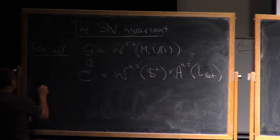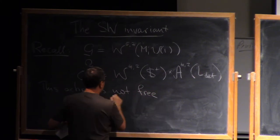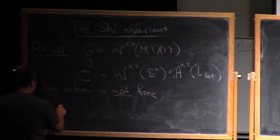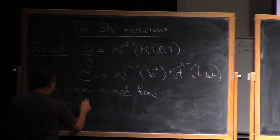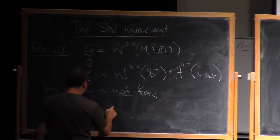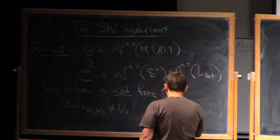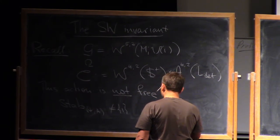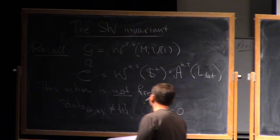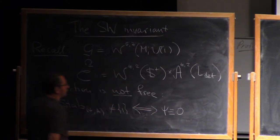This action is not free. If you consider the stabilizer of a point (ψ,A), whenever ψ is zero everywhere, I have always a non-trivial stabilizer, which is just a circle given by constant maps. This is if and only if, an easy observation.